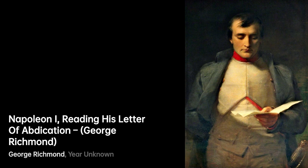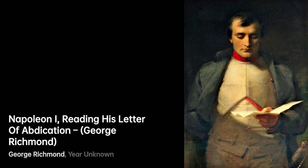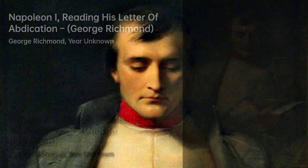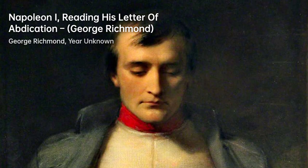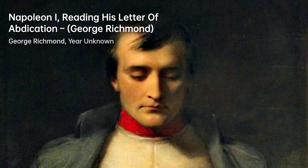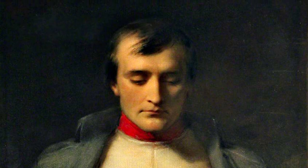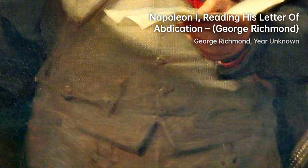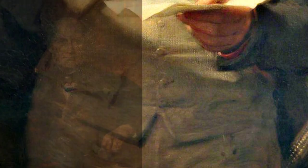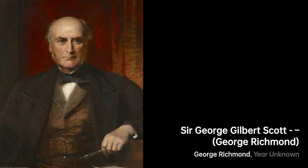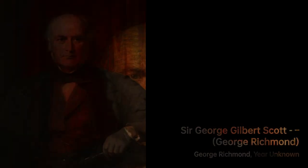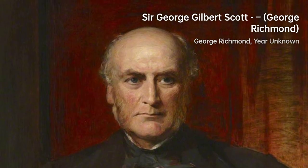George Richmond was born on March 28, 1809, in Brompton, a country village. His mother, Anne Richmond, came from the Orem family of Essex and was known for her beauty and strong character.